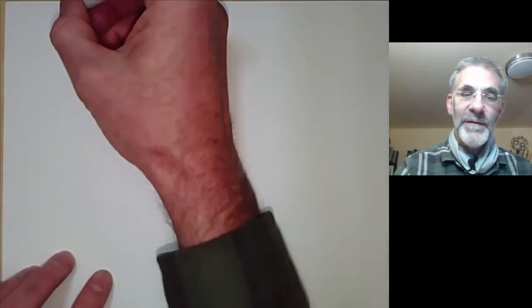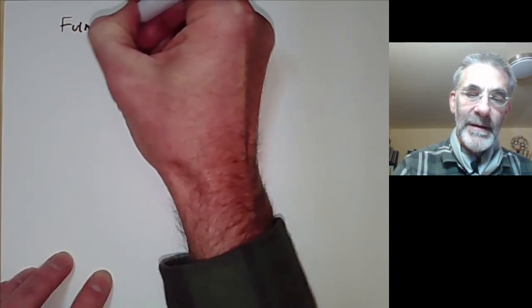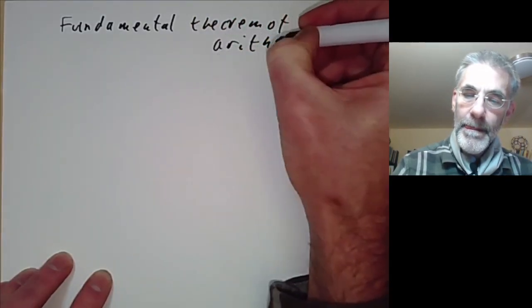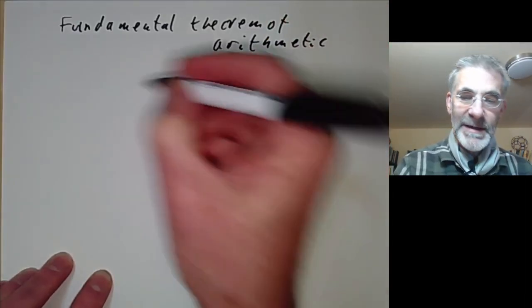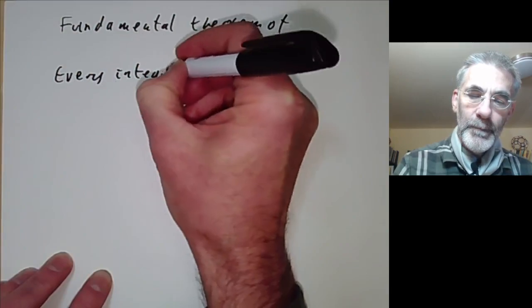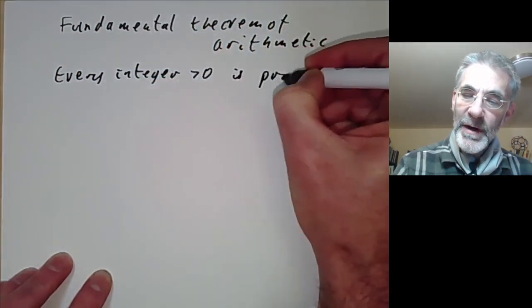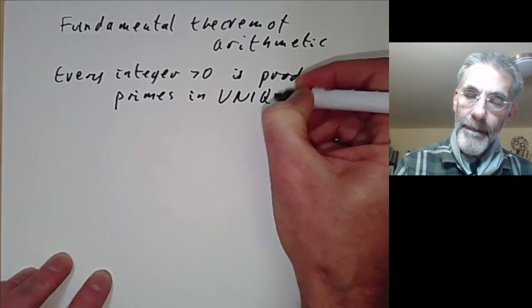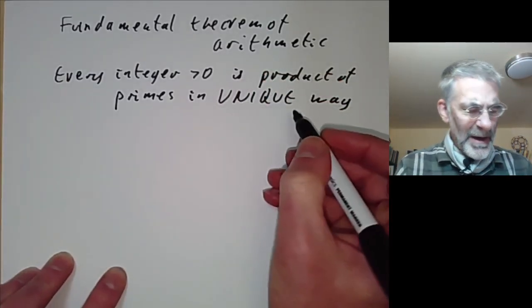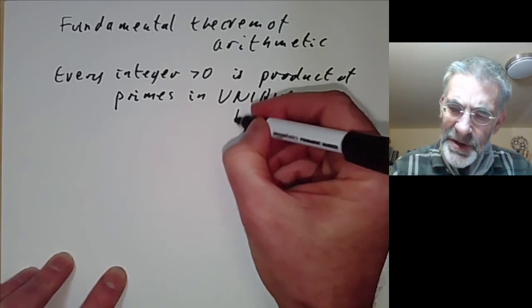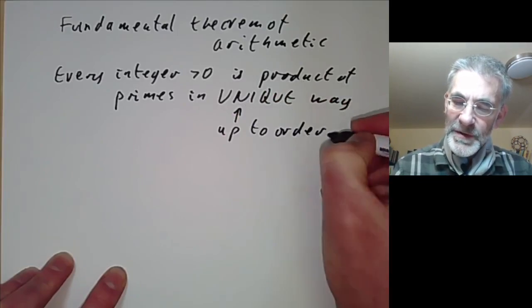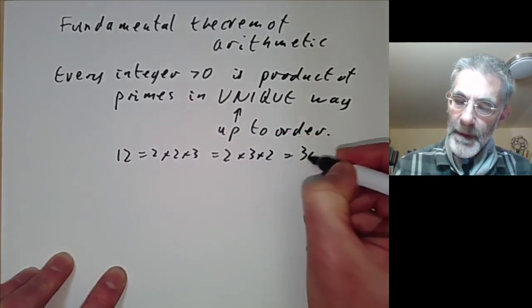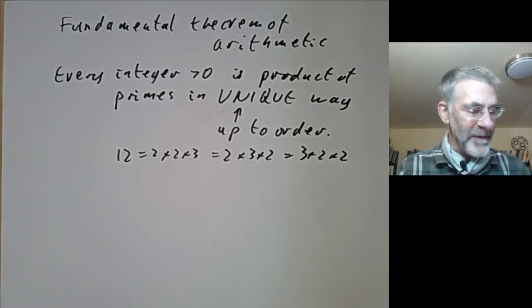This lecture is part of an online course on the theory of numbers and will be about the fundamental theorem of arithmetic. The fundamental theorem of arithmetic says that every integer greater than zero is a product of primes in a unique way — unique up to order, because if we write a number as a product of primes we can change the order, but we don't count these as being different factorizations.